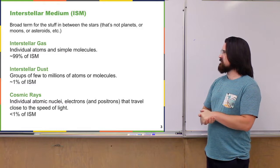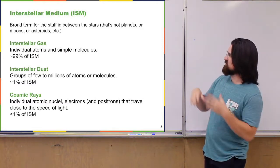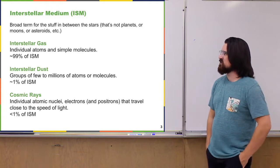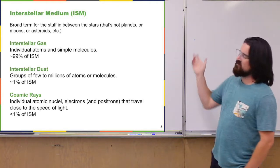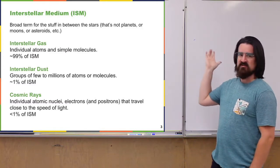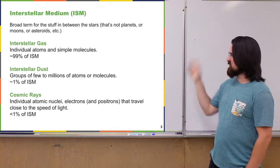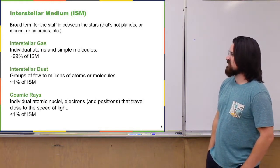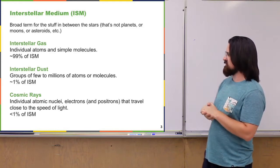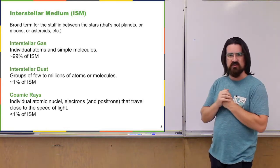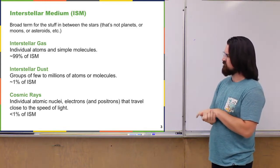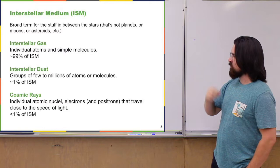It's a very broad term, keeping in mind it doesn't include planets, moons, asteroids, and other classified objects — besides all that, we clump it together as the interstellar medium. What is it made up of? Most of it is gas — individual atoms and very simple molecules — about 99 percent of the ISM. Besides the gas there's also dust: clumps of atoms and molecules large enough we start to call it dust, anywhere from a few to millions or even billions of atoms clumped together into one dust grain. This is about one percent of the interstellar medium.